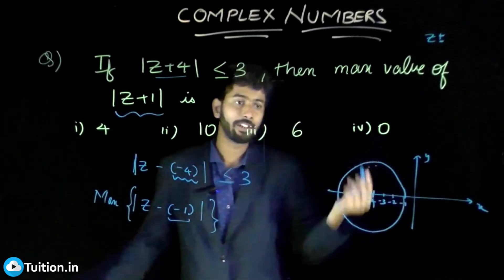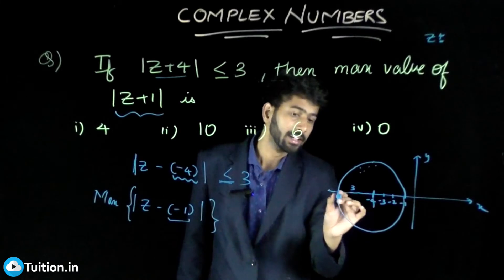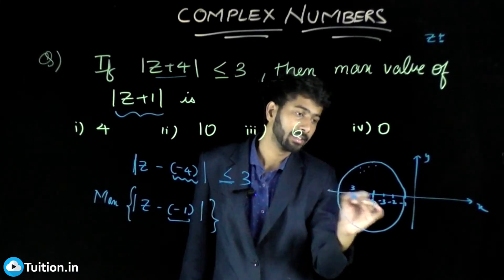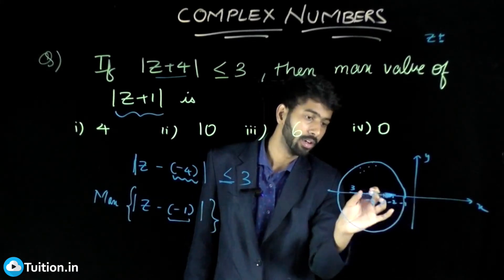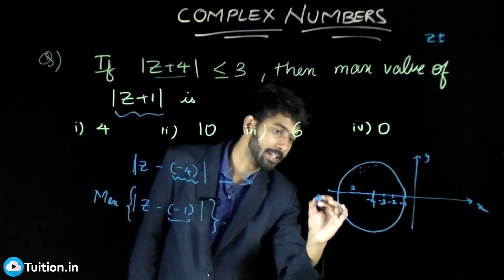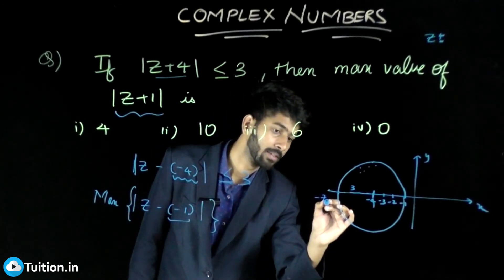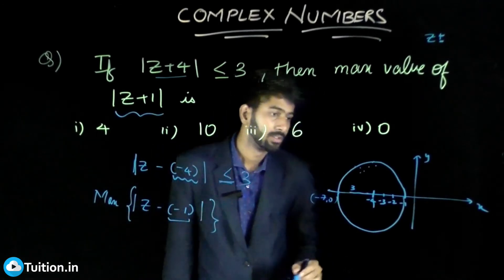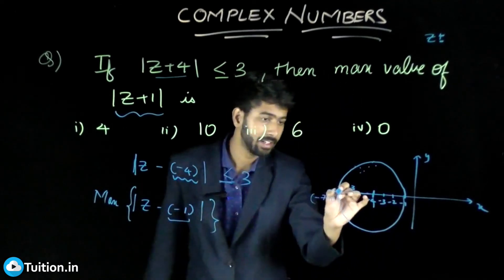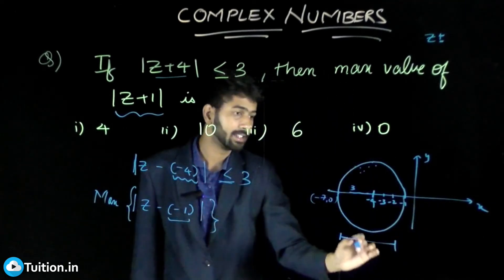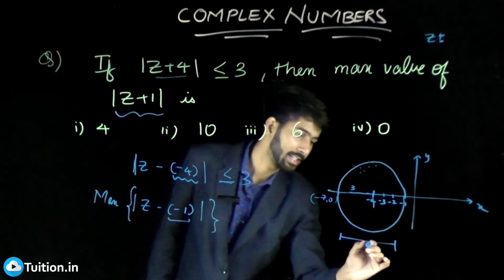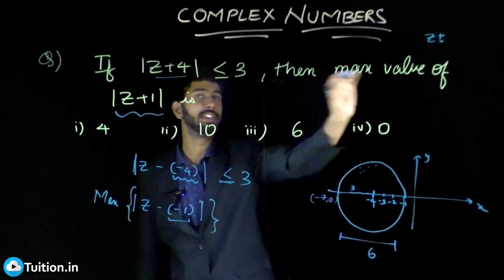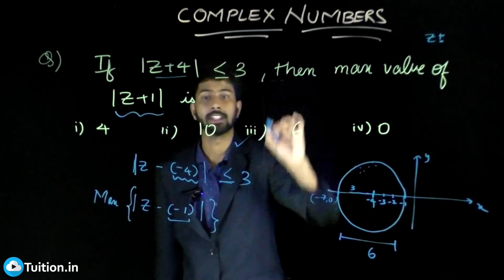So this point is - this is minus 4, and then if you go this way, it will be minus 7, 0. So this is minus 1, this is minus 7. The distance between them is nothing but twice the radius. Radius is 3, so the distance is 6. So the maximum value is 6.